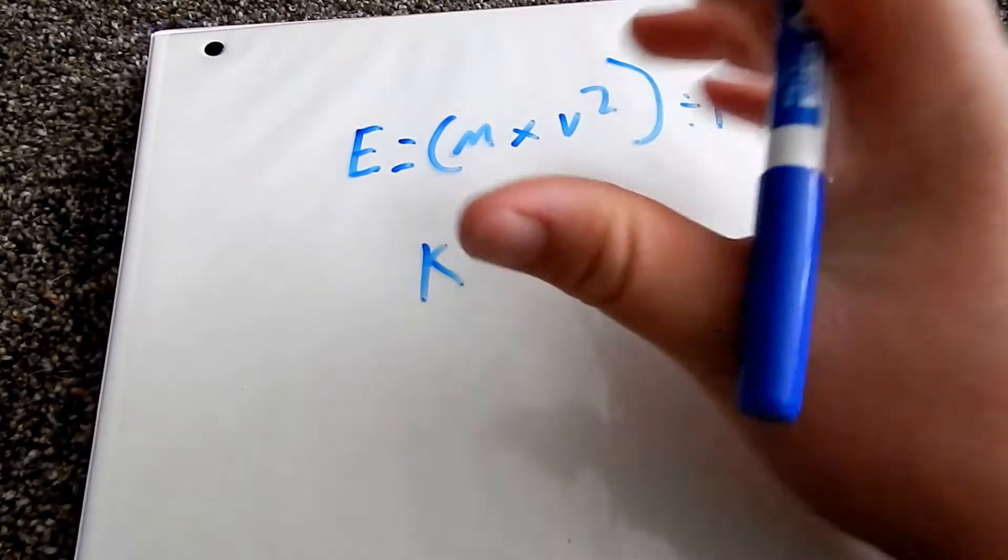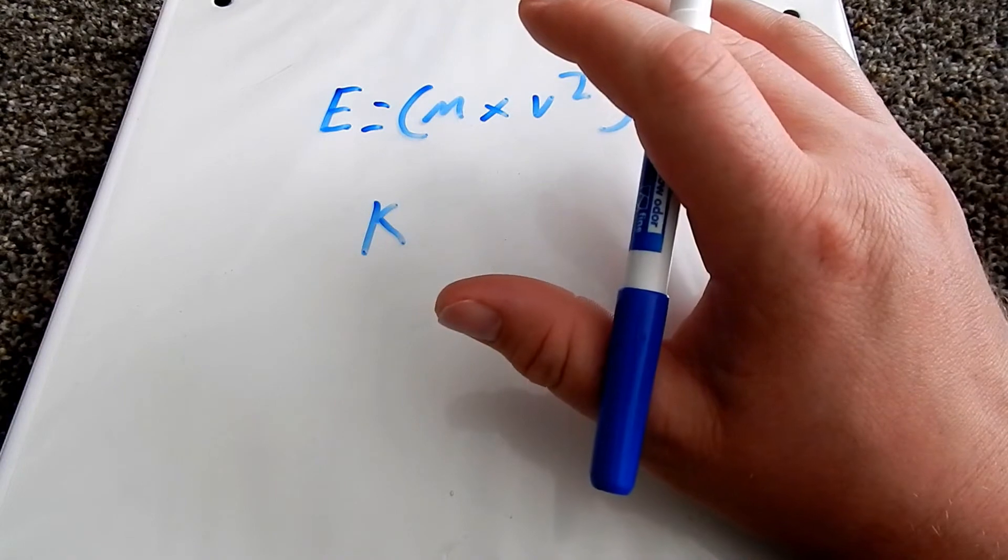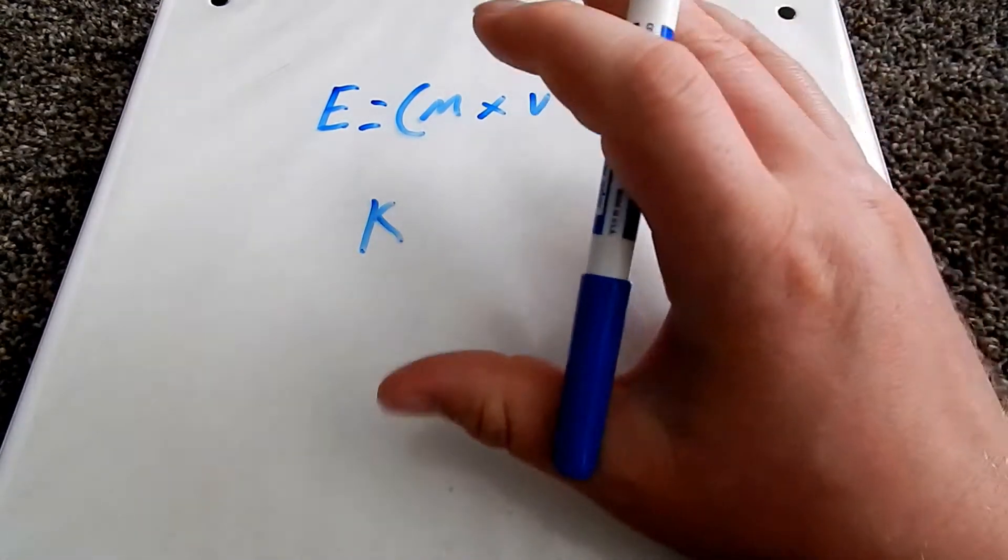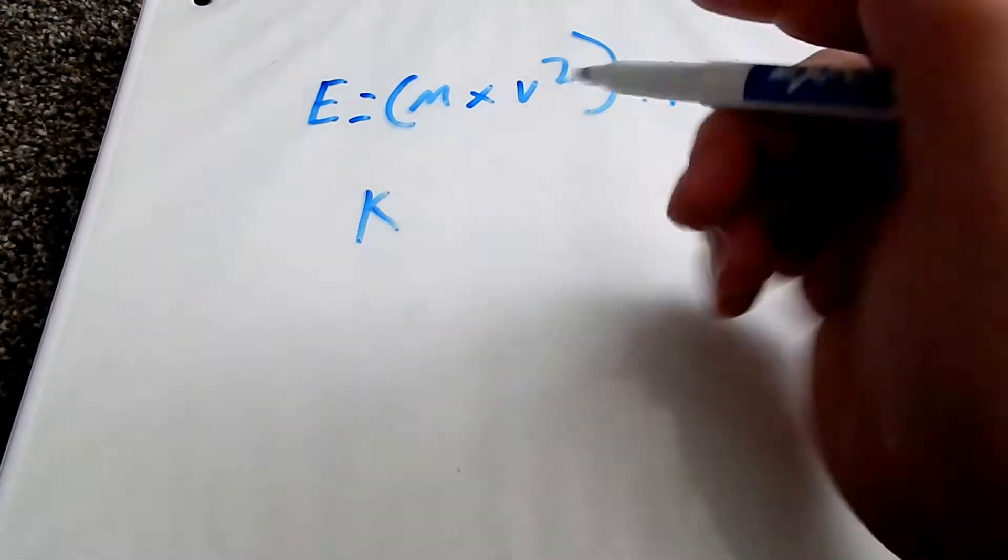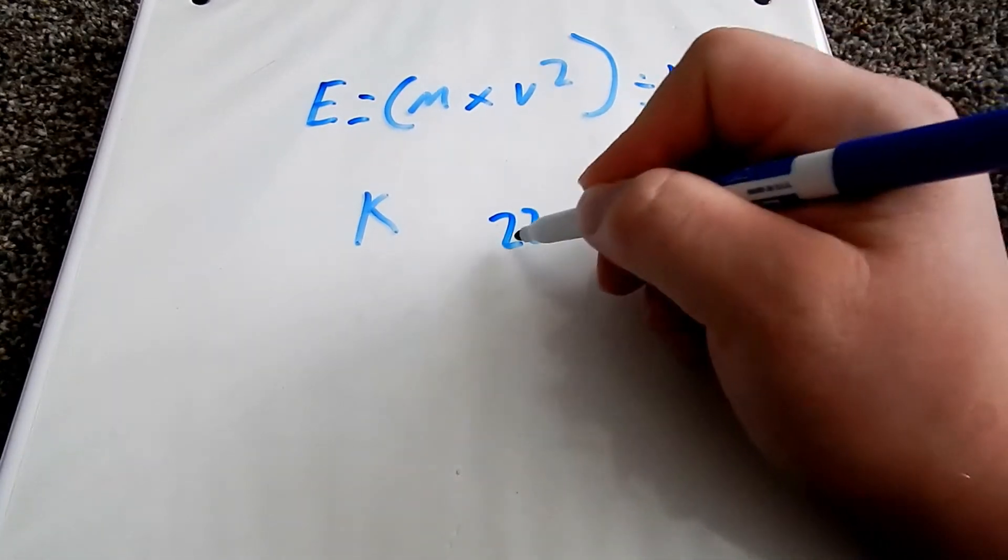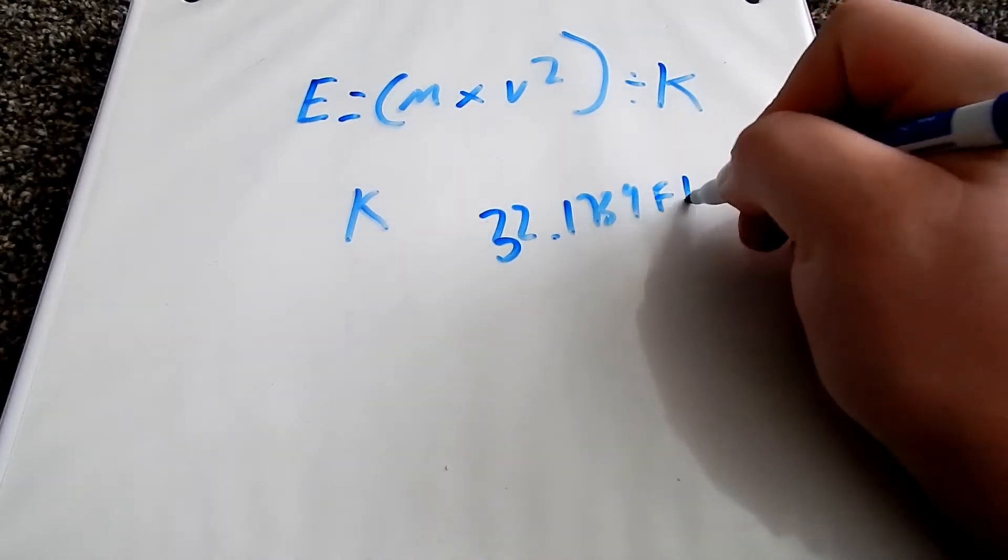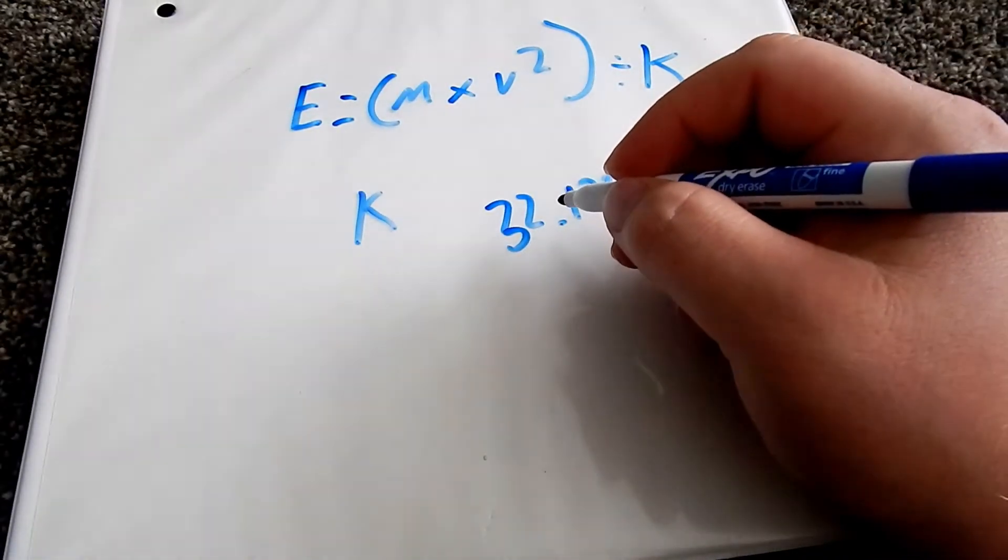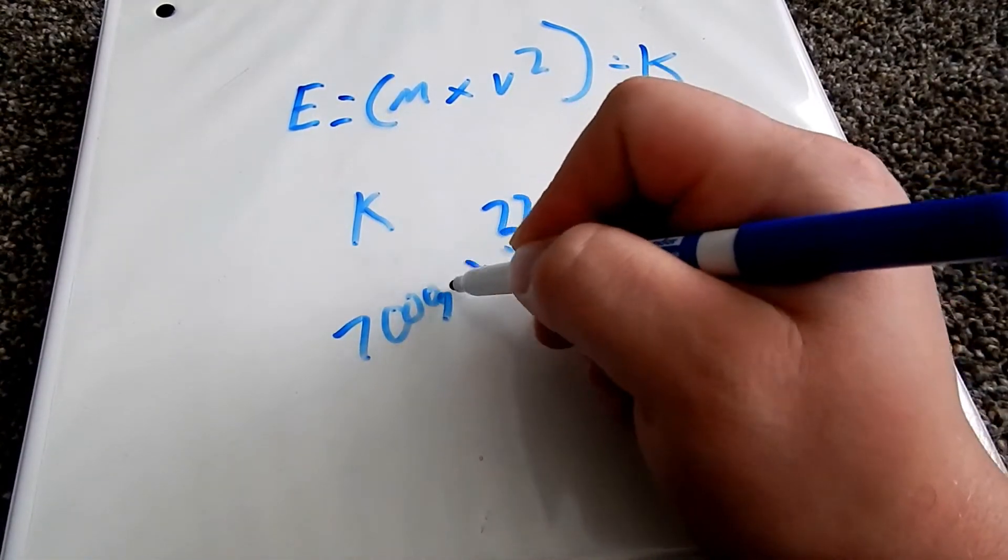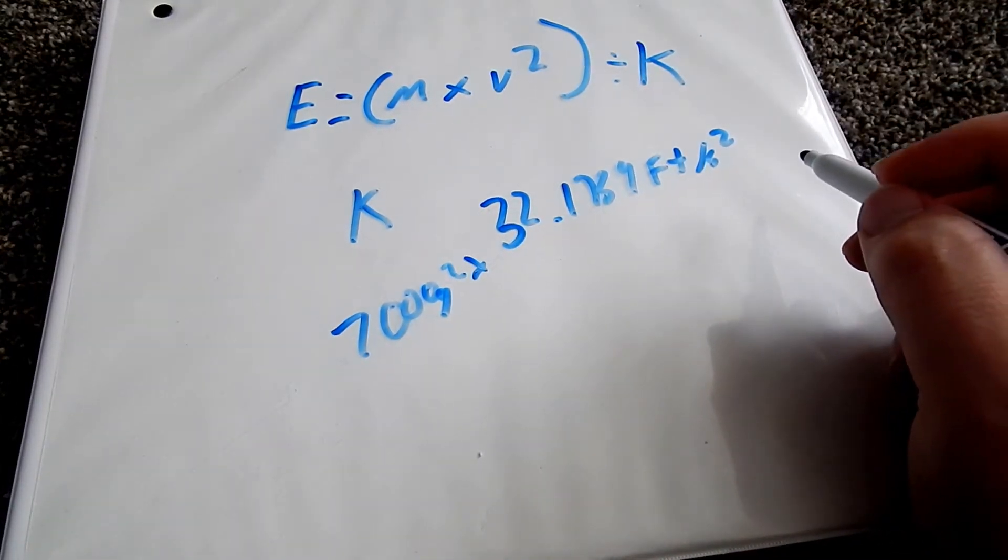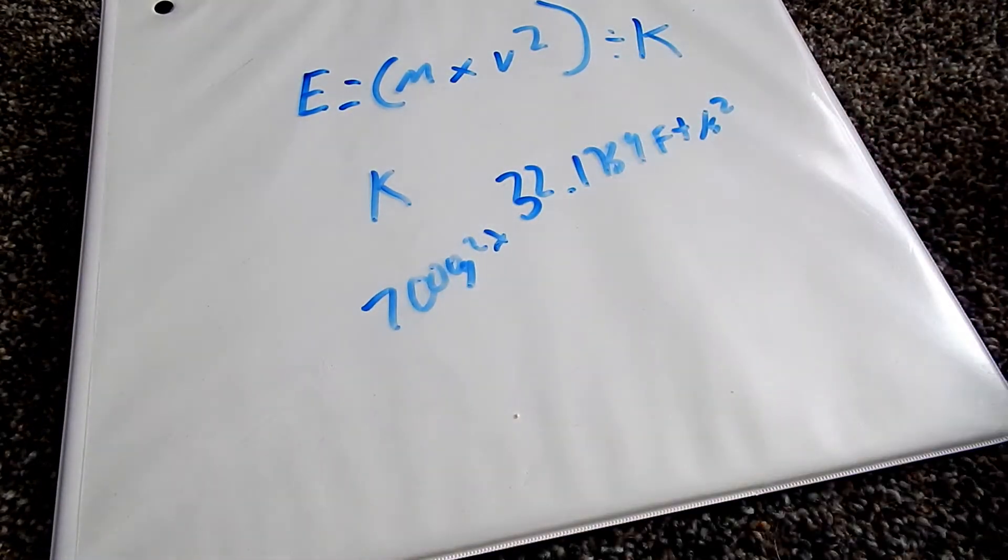Now k is kind of from the European metric version. They take the acceleration due to gravity, which I believe it's 32.1739 feet per second squared, and they times that by 7,000 grams squared.